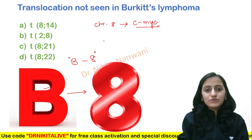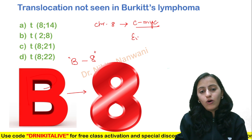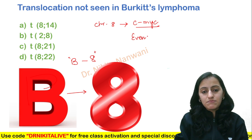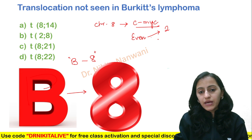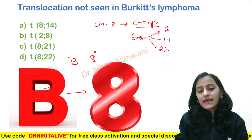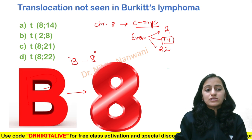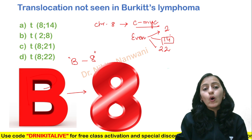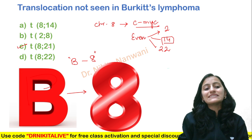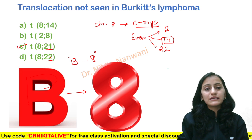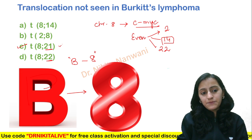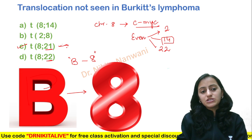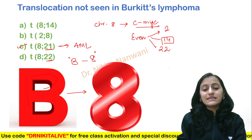The translocation partner chromosomes are all even numbers. You have translocation 2;8, 8;14, and 8;22. 8;14 is the most common. So we do not have an odd-numbered translocation, which means 8;21 is not present in Burkitt's lymphoma — it is 8;22 which is present, not 8;21. Translocation 8;21 is present in AML.